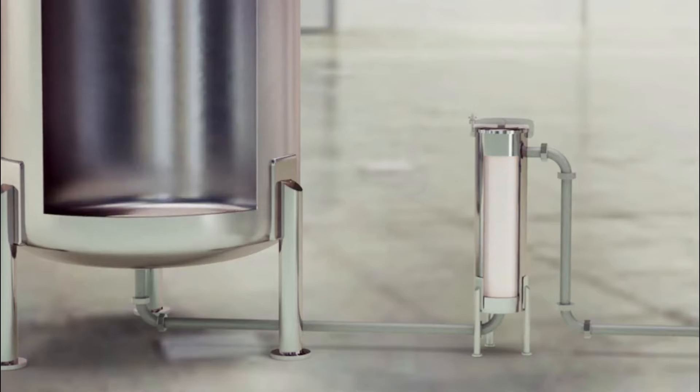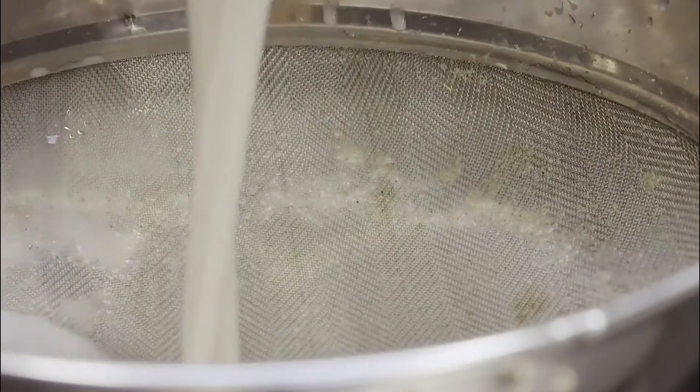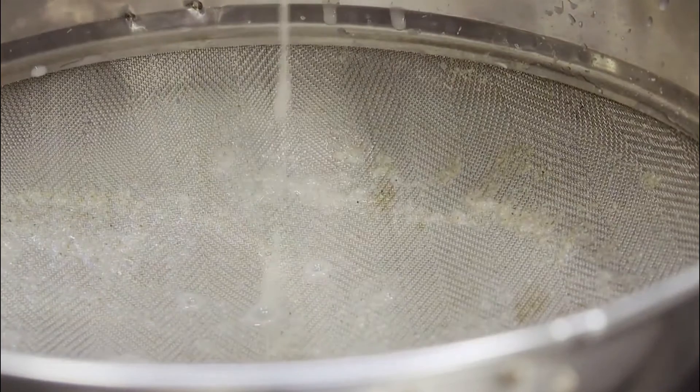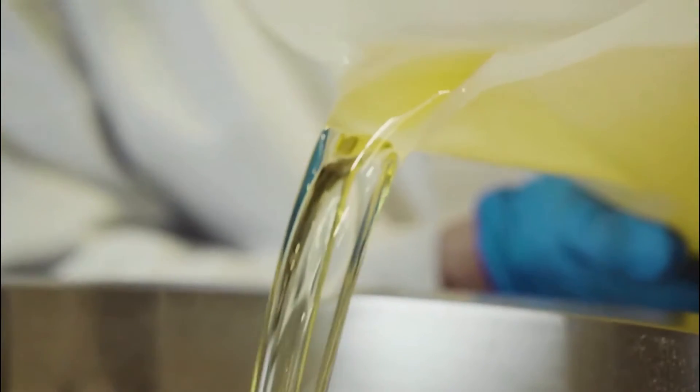With the oats cleansed and purified, the next step is transformation through milling. Guided by state-of-the-art machinery, the oats are meticulously ground into a fine powder, liberating their natural oils and flavors, and paving the way for the creation of a luxuriously creamy oat milk.